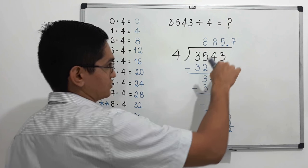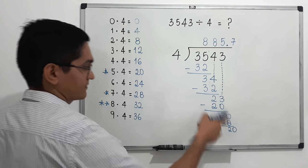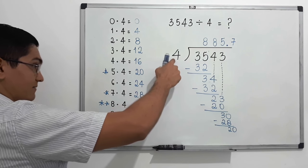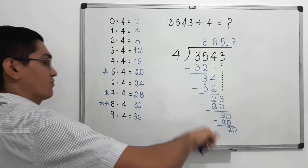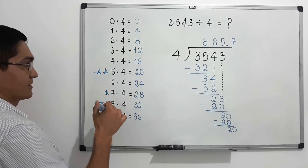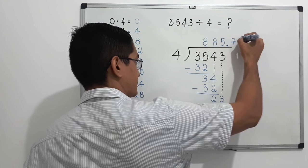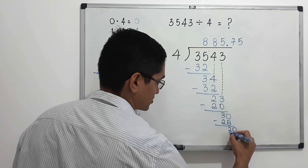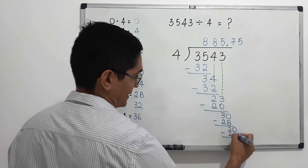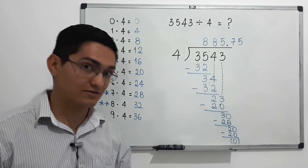30 minus 28 equals 2. Since we have the decimal point, we bring down another zero, giving us 20. What number from zero to nine do we multiply by four to get 20? That number is five, because five times four equals 20. We write five, then 20 below, and subtract. 20 minus 20 equals zero — we have nothing more to divide.